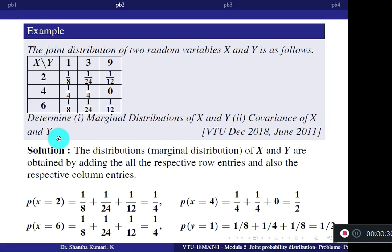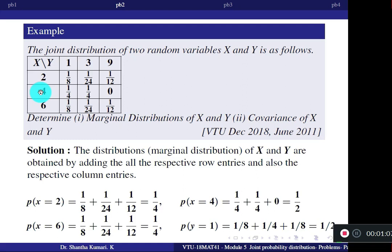Marginal distributions are nothing but individual probabilities. To find individual probabilities of X, we add the entries in front of each X value row-wise. For X=2: 1/8 + 1/24 + 1/12 = 1/4. For X=4: 1/4 + 1/4 = 1/2. For X=6: 1/8 + 1/24 + 1/12 = 1/4. You can verify by adding all three: 1/4 + 1/2 + 1/4 = 1.